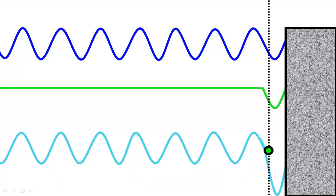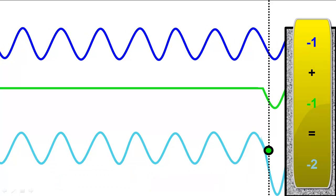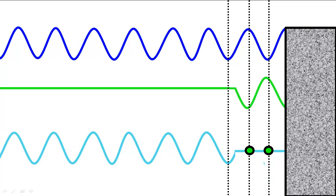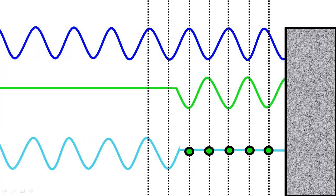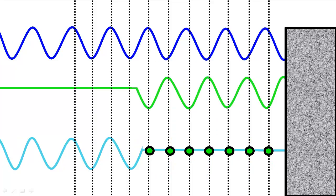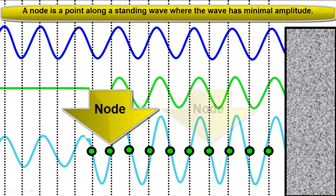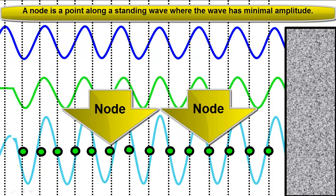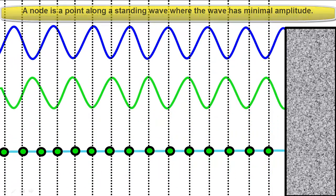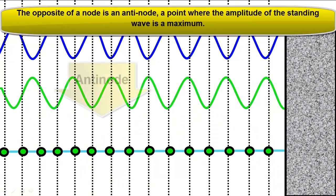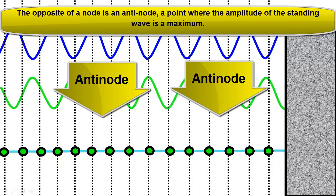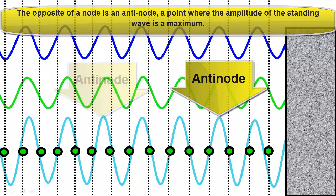Moving it forward a bit further, you actually get a positive value and a bigger value — although negative in this case — for the actual wave that's seen. As you move this process forward, a pattern emerges and you get these fixed points that don't seem to vibrate much, or have very small amplitude, and they're called nodes. And this is basically what a standing wave is.